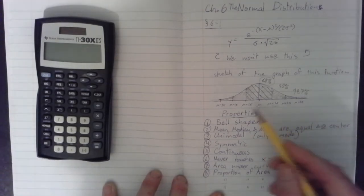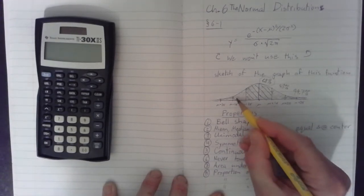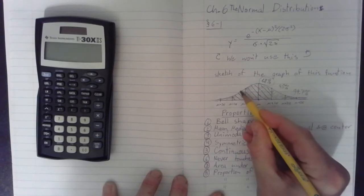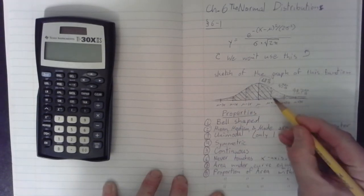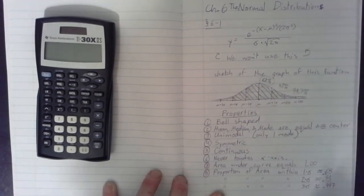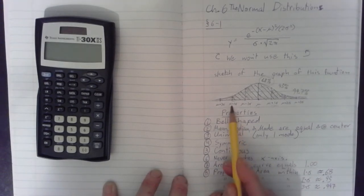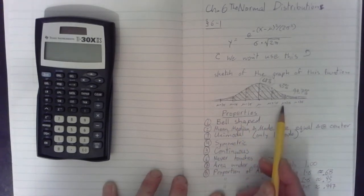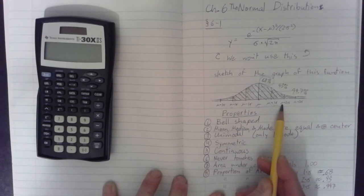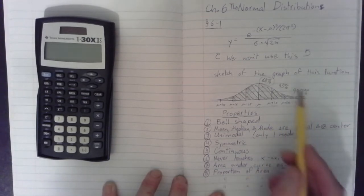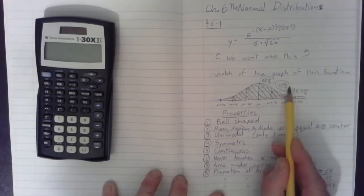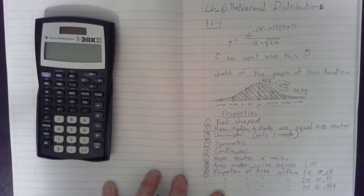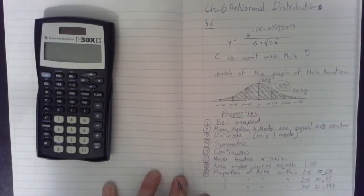So, you might remember the empirical rule says that this proportion right here, if you are within two copies of the standard deviation, so from mu minus two sigma all the way up to mu plus two sigma, that is equal to 95% of the total area underneath this function's graph.